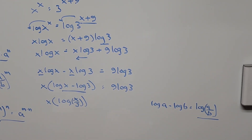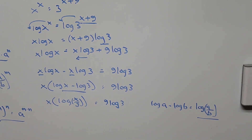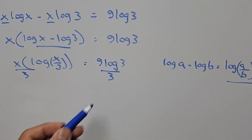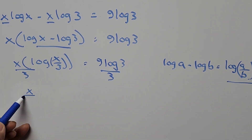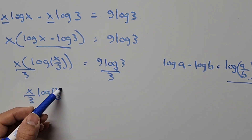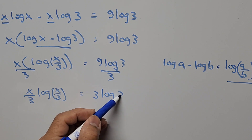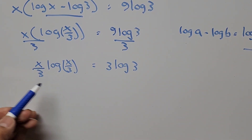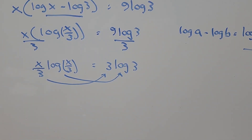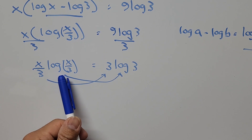Going back to our equation, the right-hand side remains 9 times log 3. We now divide the whole equation by 3, so the left-hand side becomes (x divided by 3) times log of (x divided by 3), and the right-hand side becomes 9 divided by 3, which is 3, times log 3.